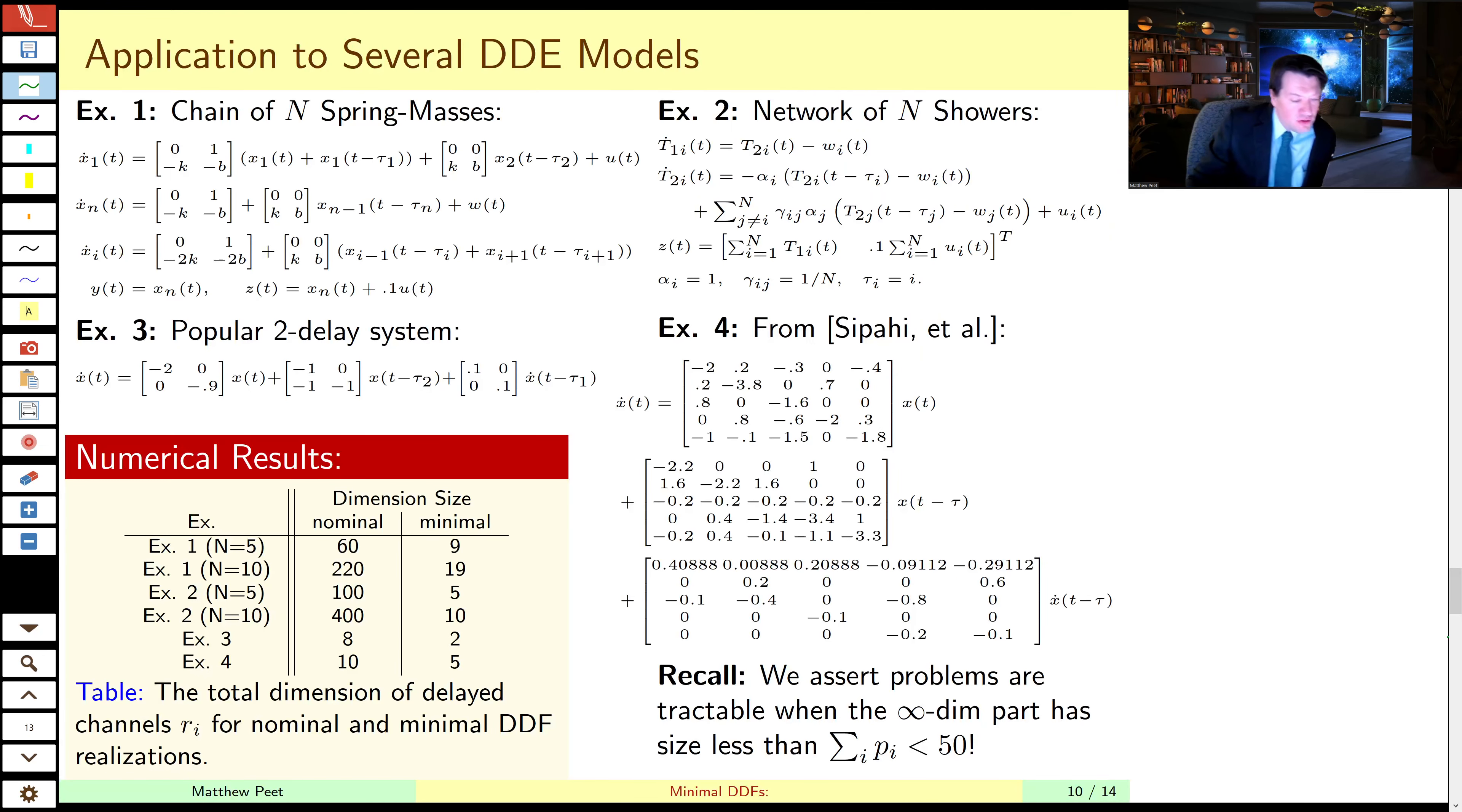So we can apply that to networks and maybe systems which have less obvious structure to them. So we have four cases here, two networks and two unstructured problems. So this is a chain of n spring masses. This is a chain of n showering users. In both cases, we have n delays and n states. So if we just use the naive conversion formula, we get very large state spaces, which are clearly greater than 50 and therefore intractable. We apply the SVD reduction technique, however, and we get much smaller systems going from 400 to 10 infinite dimensional components. Likewise, for these structurally less obvious problems, we also get significant reduction from 8 to 2 and from 10 to 5.